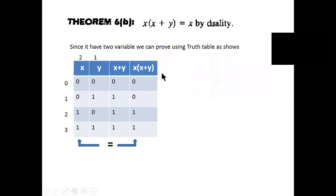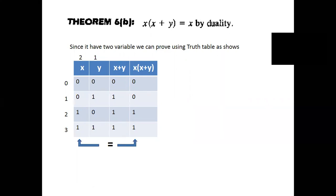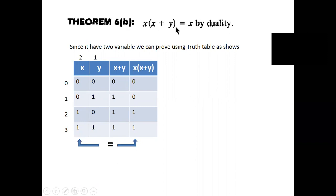Next, I told you we can also prove using a truth table. See here: this is theorem 6p, x(x plus 1) equal to x. The left hand side and right hand side should be equal. I am using the truth table values.